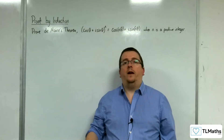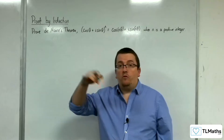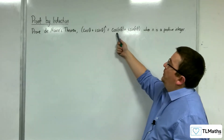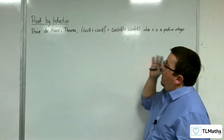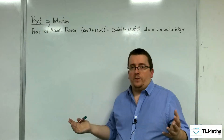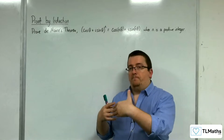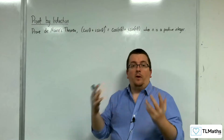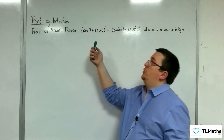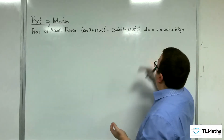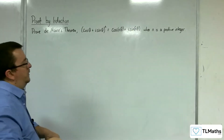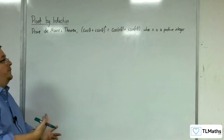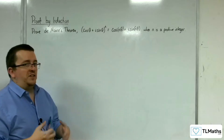Something that we're going to meet later on in the playlist is complex numbers, and part of that is de Moivre's theorem. De Moivre's theorem says that (cos θ + i sin θ)^n is equivalent to cos(nθ) + i sin(nθ). That won't make much sense if you haven't done any complex numbers yet, so you probably want to go to that part of the playlist and cover complex numbers and de Moivre's theorem first before getting to this stage.